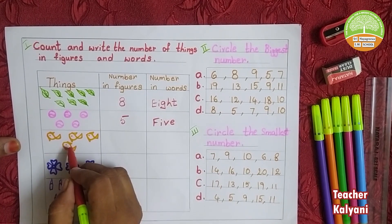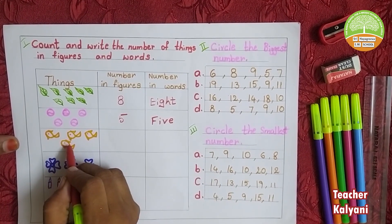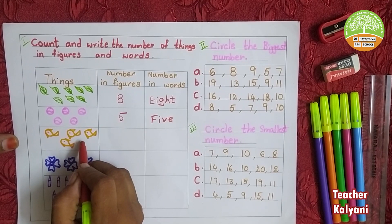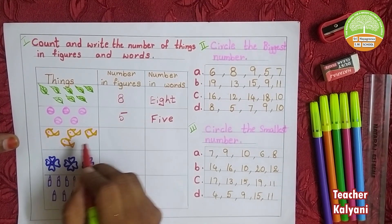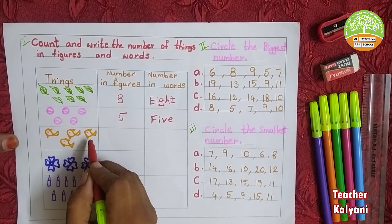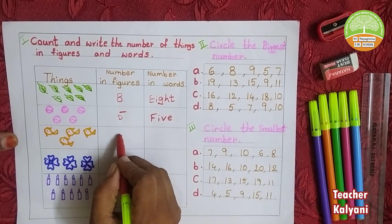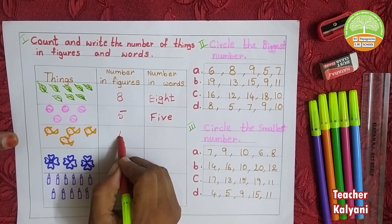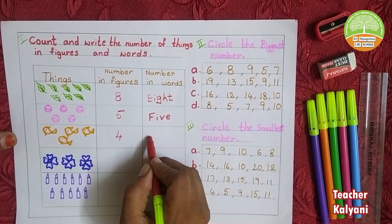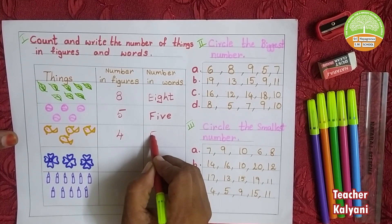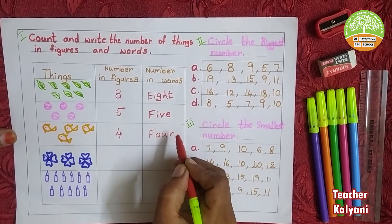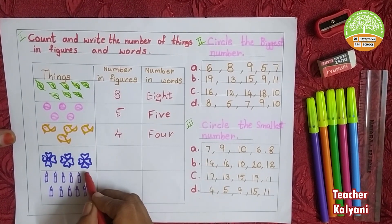Next one, we count fishes: 1, 2, 3, 4. Number in word: F, O, U, R. 4.